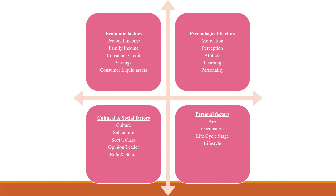Let's discuss in brief the factors mentioned here. There are other factors also which we will discuss in detail in the coming lectures. The first factor is personal income. Personal income can be divided into two parts: disposable income and discretionary income. A consumer is a rational person — before spending any amount of money, he will think twice. It all depends on how much income a person has. Disposable income is the summation of savings plus spending.